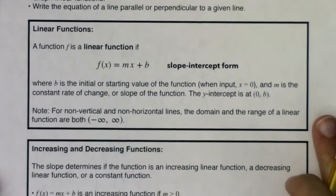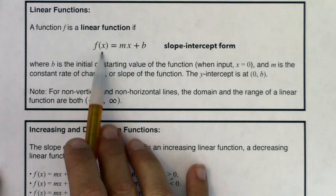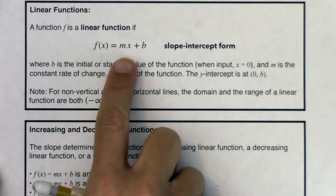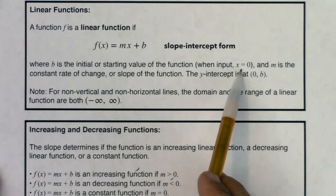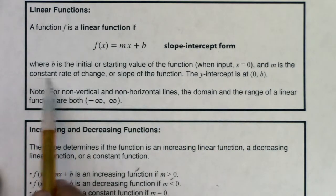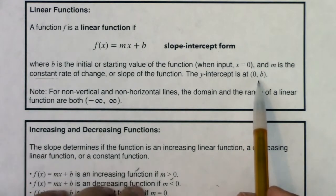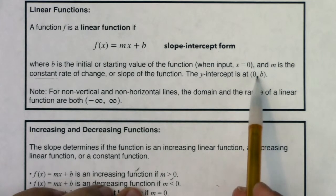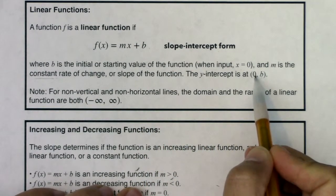So a function f is a linear function if f of x is equal to mx plus b, and we would call that the slope-intercept form of a linear function. And again, this is likely review for you. b is going to be the initial or starting value of the function, that means when your input is x equaling 0, and m is the constant rate of change or slope of the function, and the y-intercept is at 0 comma b.